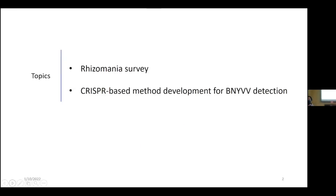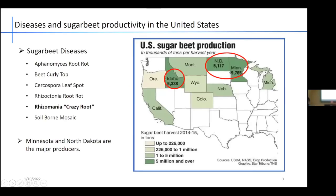My talk covers two topics: number one is the rhizomania survey that we have done for 2021, and the second part is about the technology we developed for detecting BNYVV. Looking at diseases and sugar beet productivity across the United States, there are several different diseases that affect productivity. Among those, rhizomania causes a crazy root with many different phenotypes and drastically affects productivity. Cumulatively, Minnesota and North Dakota are the major producers of sugar beet.